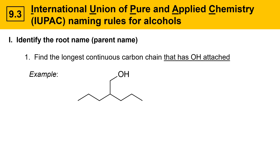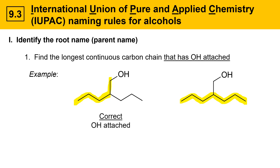Here's an example of an alcohol. We're going to look at two options for finding the longest carbon chain. One option has a five-carbon longest chain with the OH group attached, whereas the other option has a seven-carbon longest chain but the OH group is not attached. The key with alcohol nomenclature is that the OH group must be attached to the longest carbon chain in order for it to be correct. So the five-carbon chain is correct; the seven-carbon chain is not correct, even though it's longer.